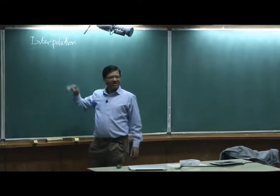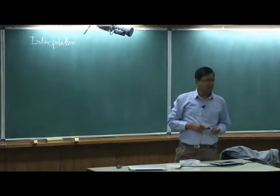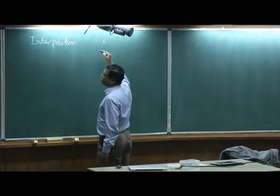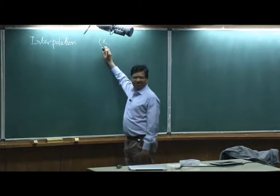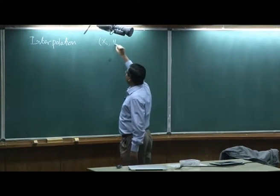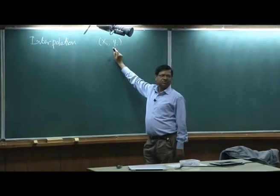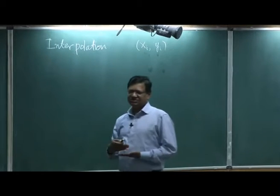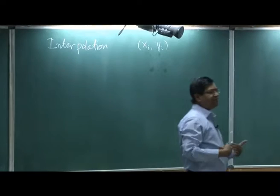Interpolation is a general word also used for extrapolation, like tomorrow's temperature. So we are given variables xi — this is my independent variable like time — and f(xi) is my dependent variable. We get some n points, and using these n points I should be able to interpolate any value in between.